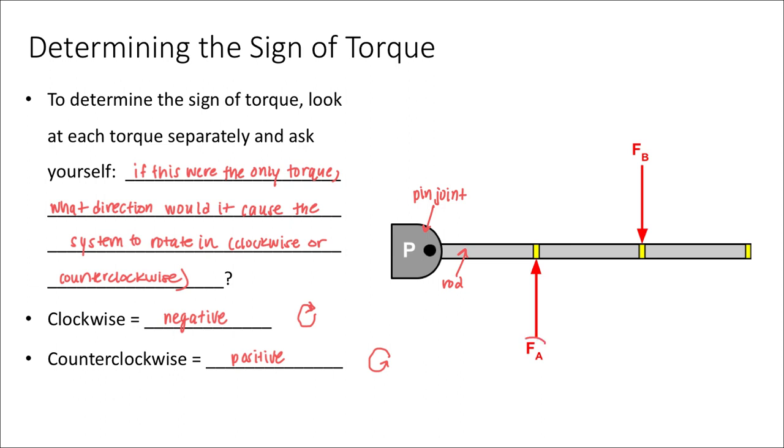I'm going to ask the question: for force A right here, force A produces a torque. If I wanted to calculate that torque, I could find the distance from the hinge. That would be my R, my lever arm. This force is completely perpendicular, so that would just be this force multiplied by R. Is that going to be positive or negative?